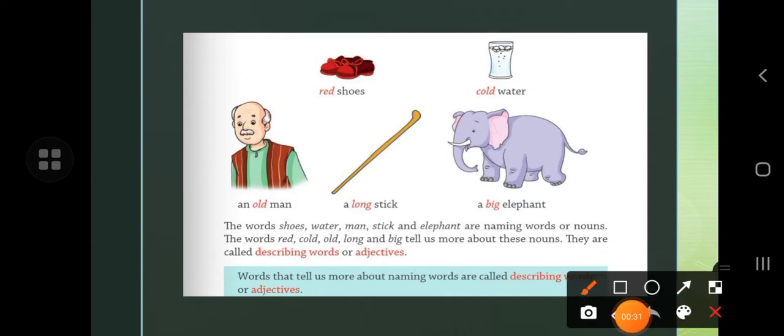You know that these are the shoes, water, elephant, stick, man. These are the naming words. These are the names of animals, persons, things, etc.